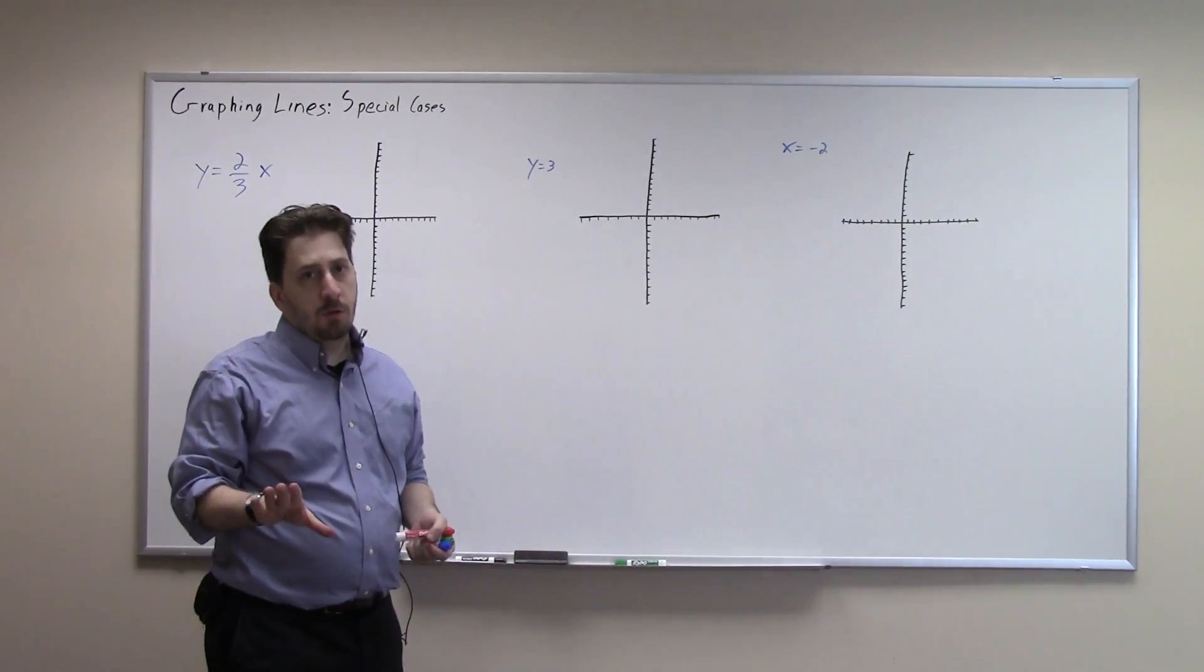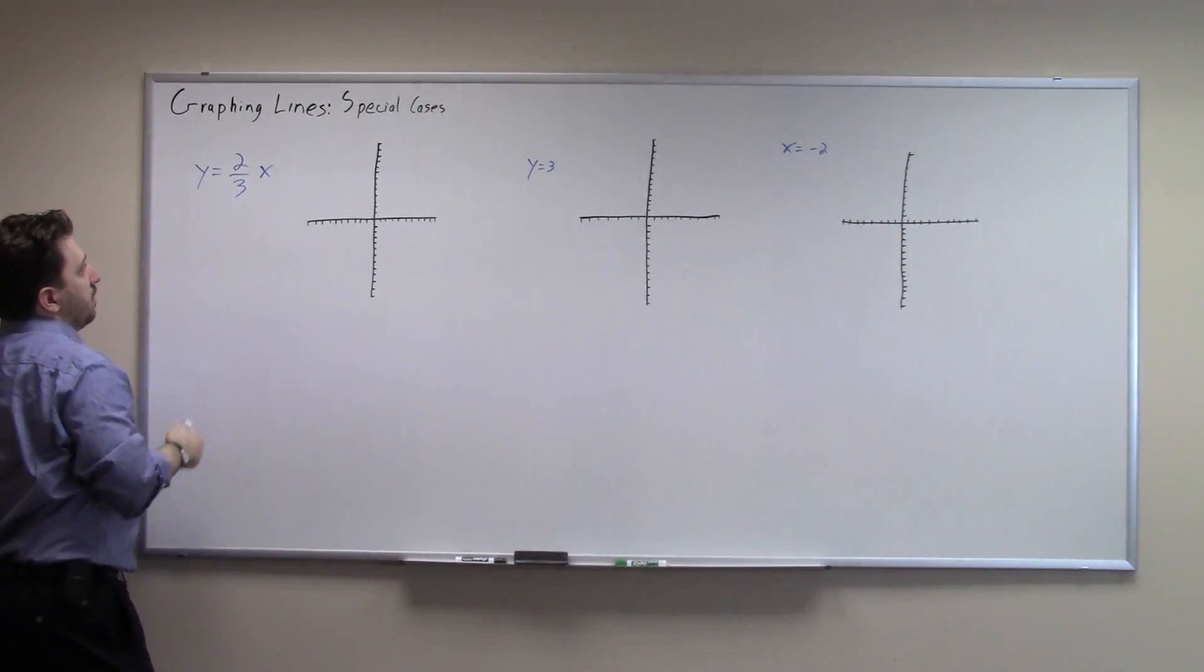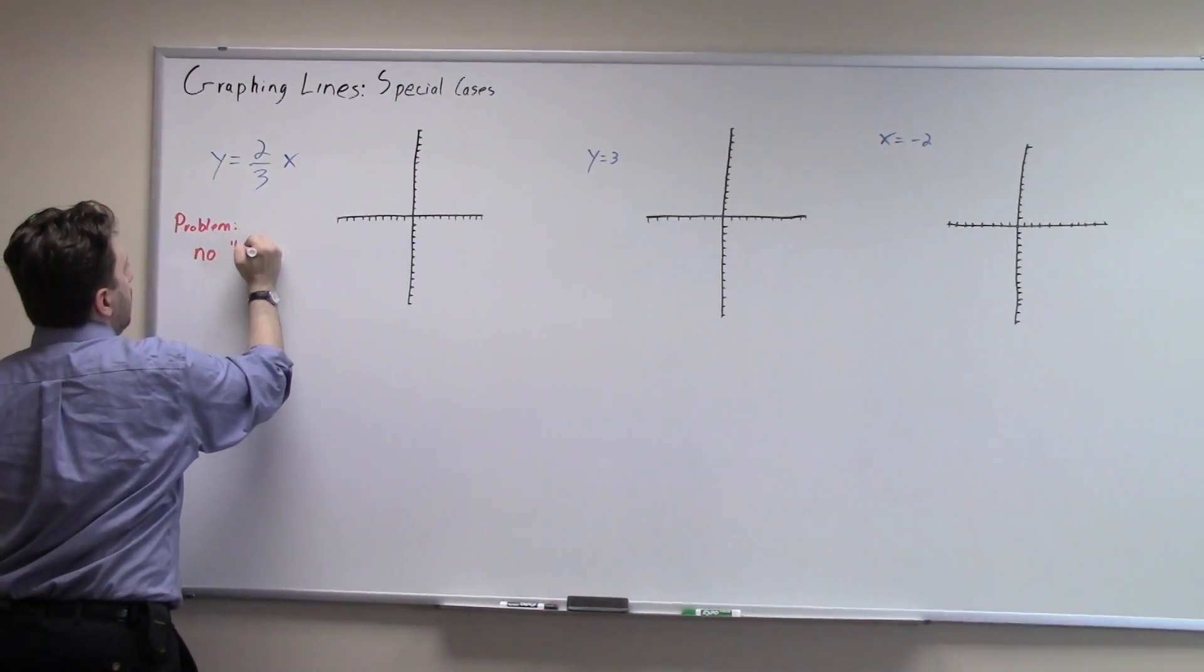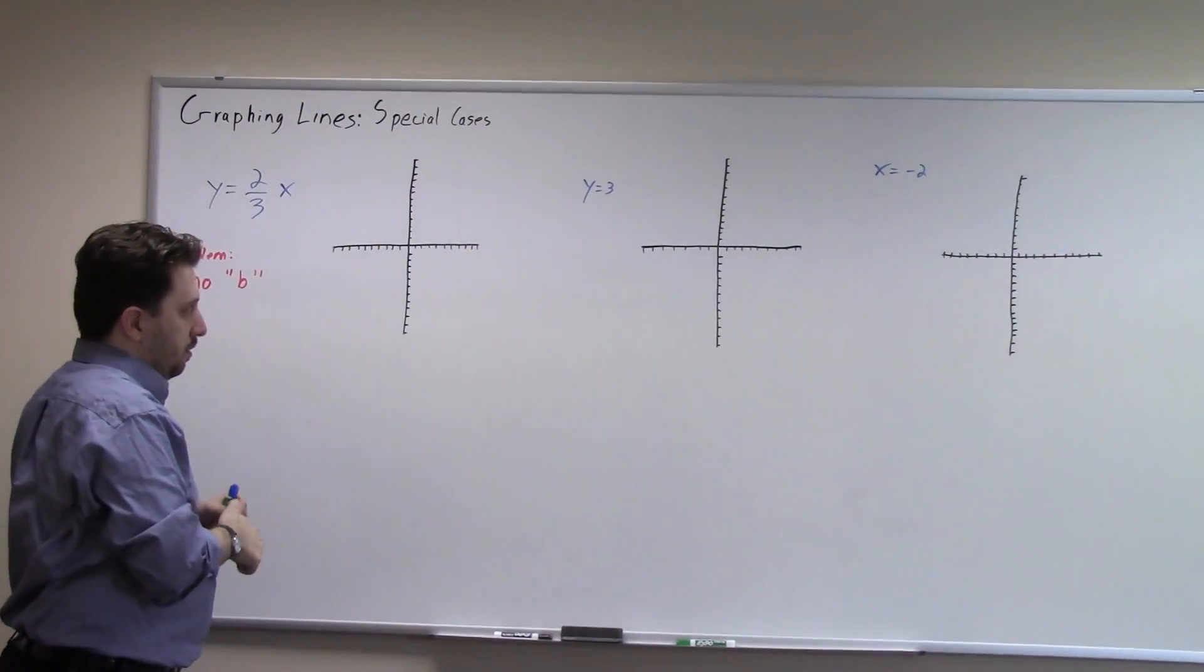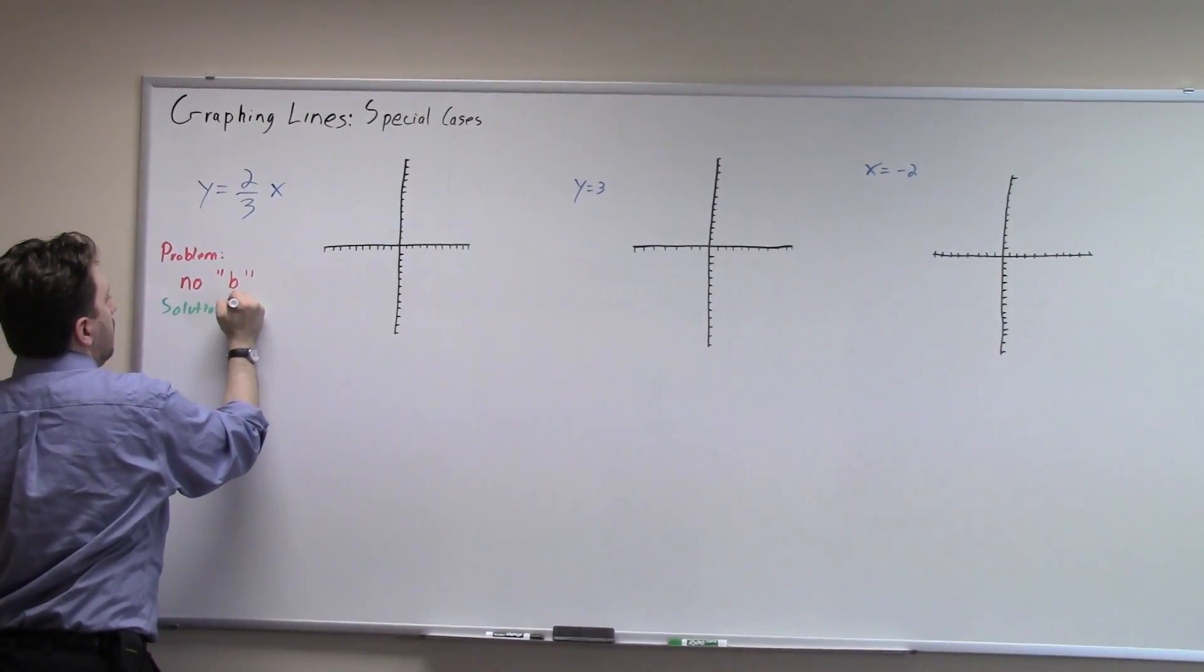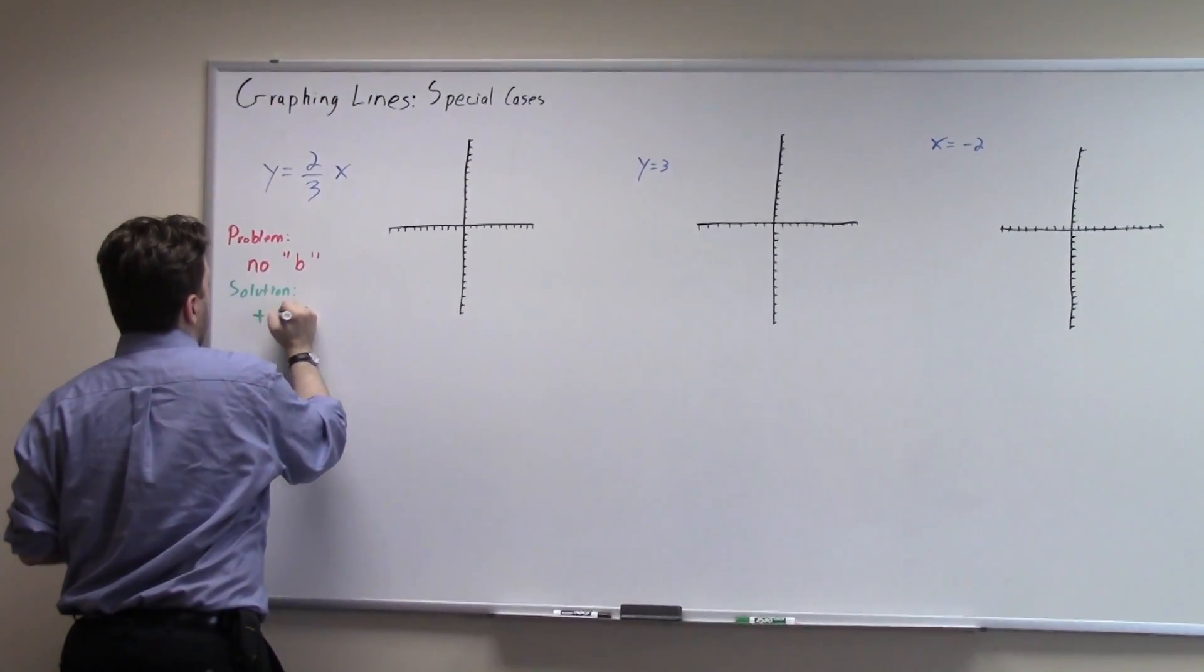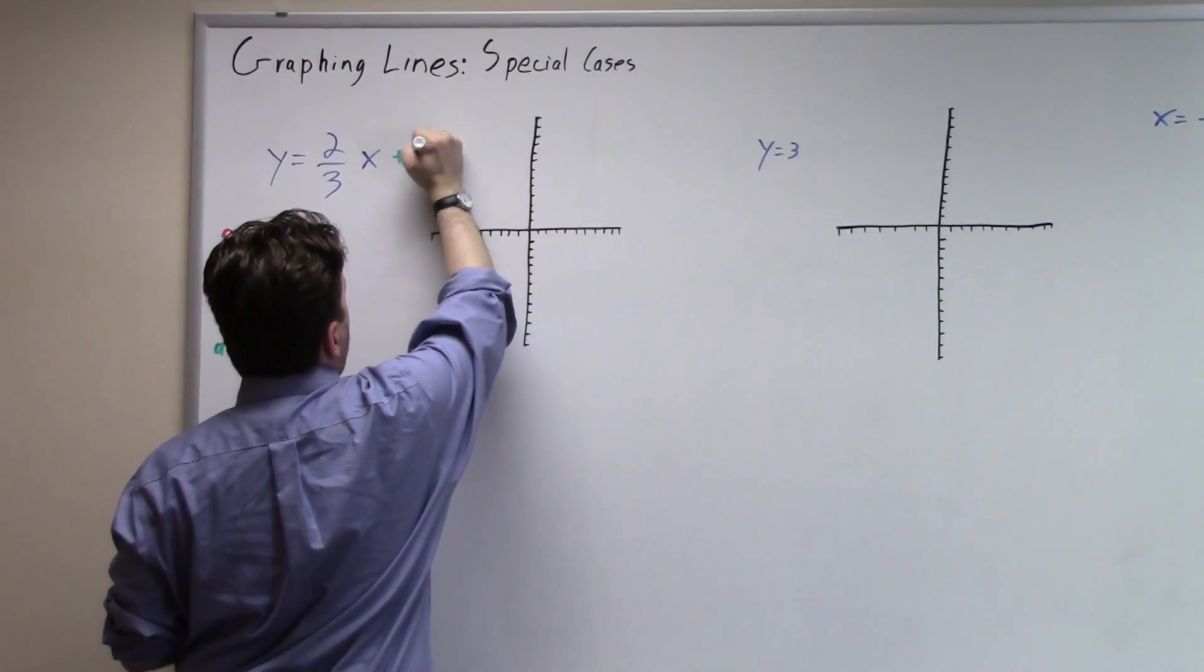The first special case that we want to deal with isn't really that bad. We have something like y equals two-thirds x. The problem here is there's no b term, there's no constant over here. So we're going to fix that by adding a plus zero onto the end of our line. I'm going to put a plus zero over here.